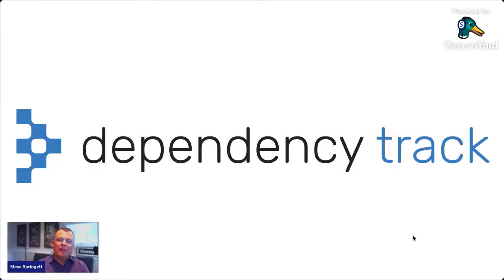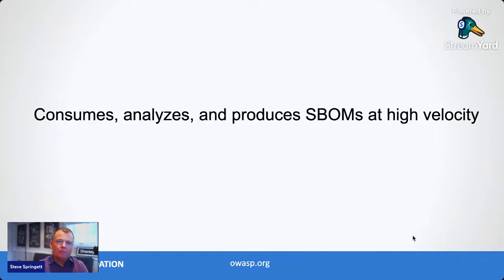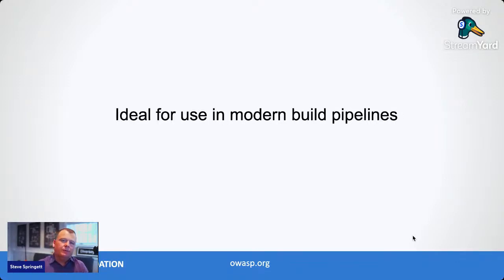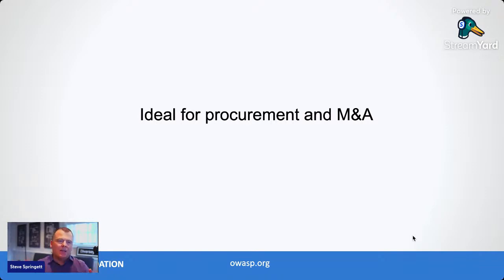But what do you do once you have an SBOM? Now that you have one, let's talk about how to operationalize it. What does Dependency Track do? It consumes, analyzes, and produces SBOMs at high velocity — making it ideal for use in modern build pipelines, as well as for procurement and M&A. I like to show a manual use case in a demo because automation seems like magic at some point, but I want to walk you through the actual steps. Dependency Track is really designed to answer one question: what is affected by Log4Shell and where?